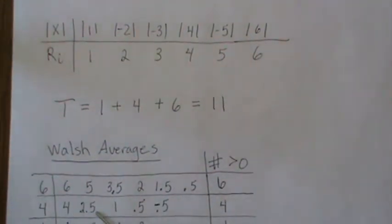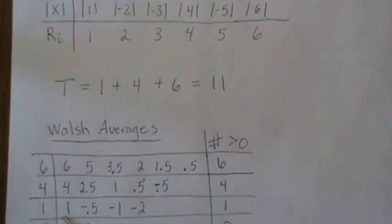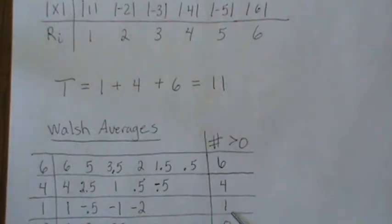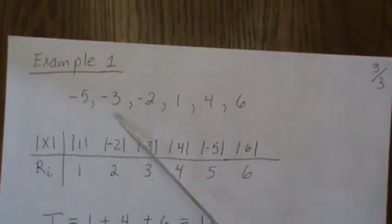We take four and find the Walsh average against the rest of them. These are the values, there's one, two, three, four positive. Then we take the one and find the Walsh averages, there's one positive.